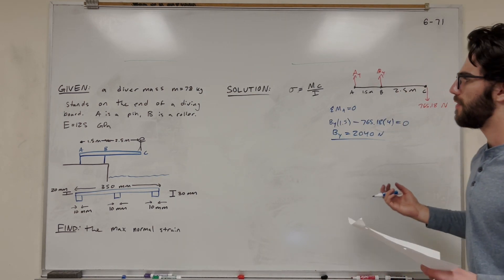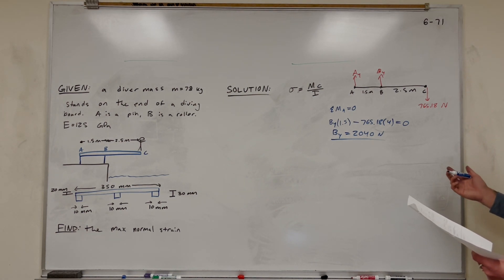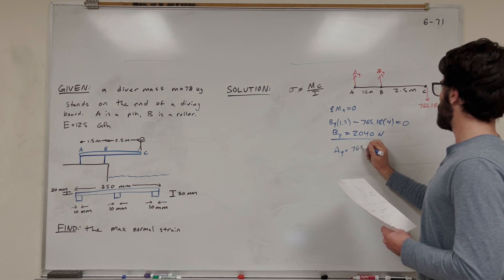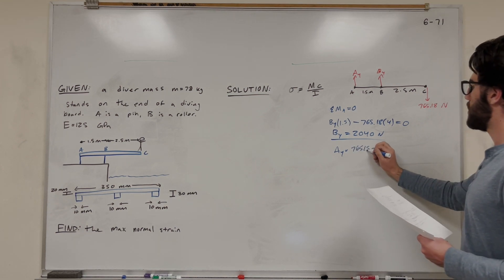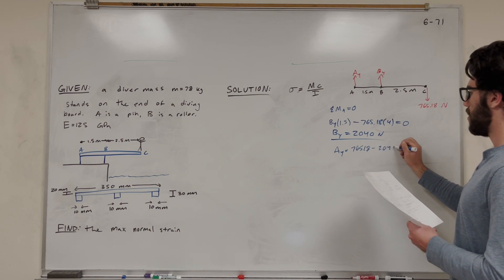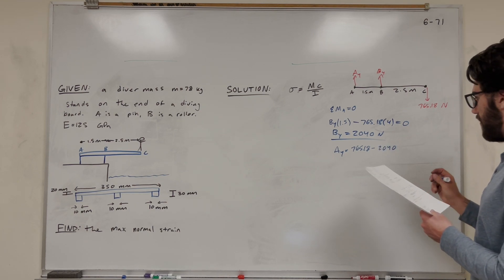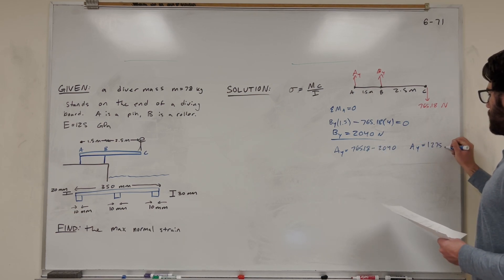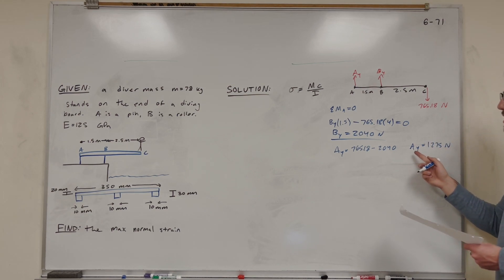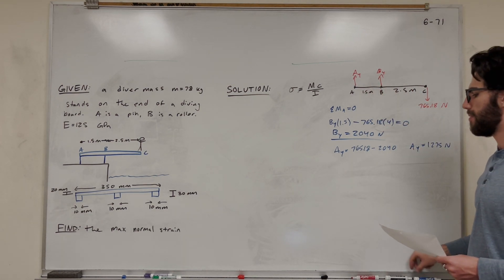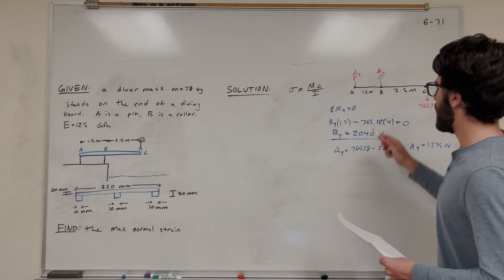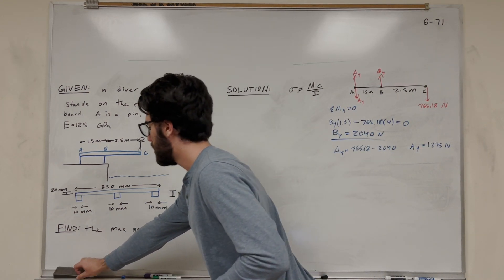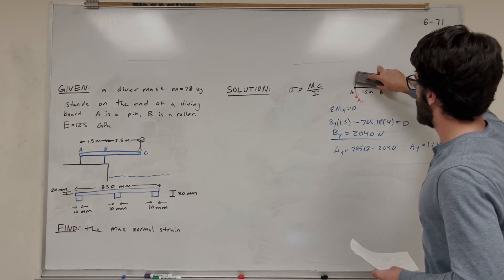Then we do the sum of the forces in Y. We find A_y is equal to 765.18 minus B_y — 2040 — and we get A_y equals negative 1275 newtons. The reason we get a negative number is because we drew it wrong. What we find is that A_y is actually supposed to point downward, so let's redraw it going down for a nice, accurate diagram.